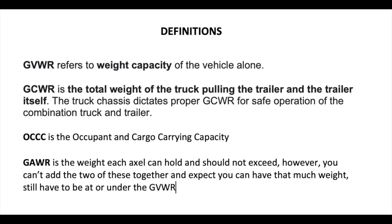So let's talk about what these definitions mean on the stickers on the side of your door. The GVWR is actually the weight capacity of the vehicle alone — so the vehicle by itself, say a motorhome, should never exceed the GVWR. The GCWR is if you are pulling a trailer with the vehicle; you should never exceed that total, which would include your trailer and your vehicle that's doing the towing. That's the GCWR.